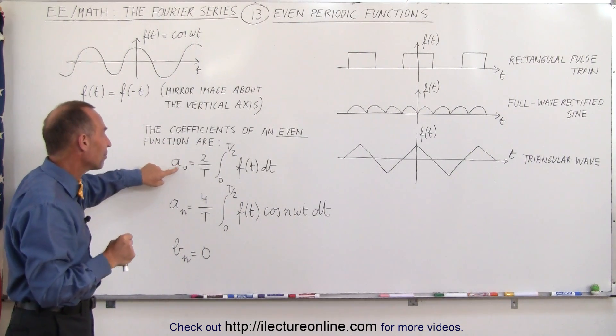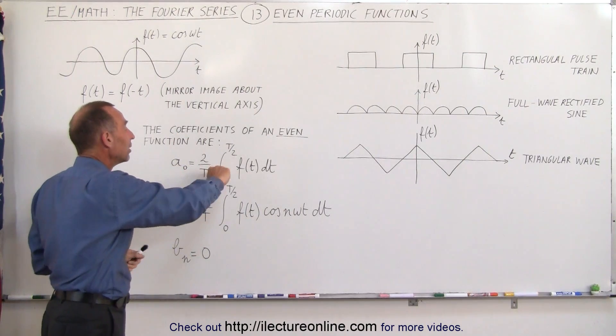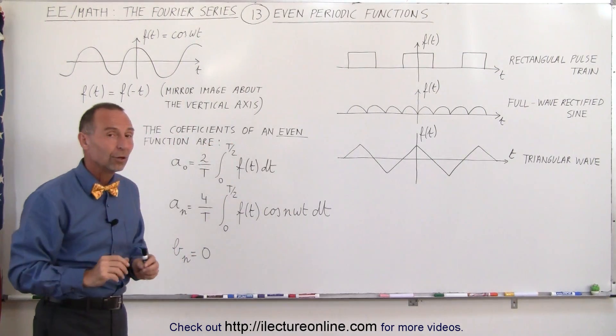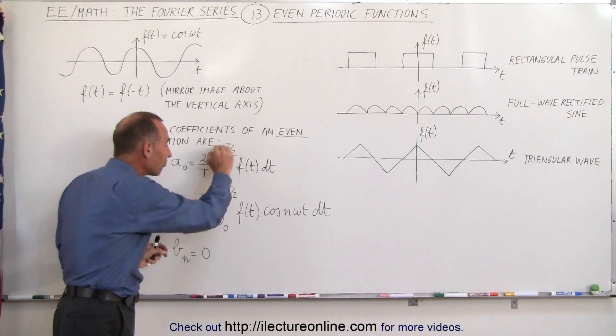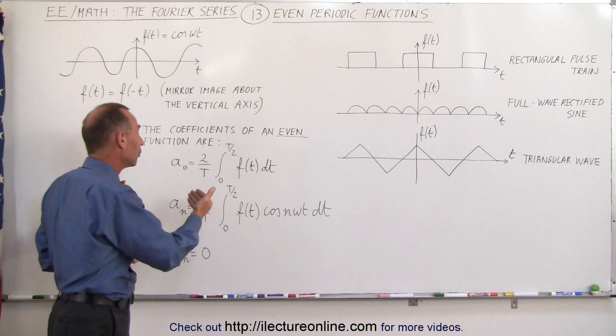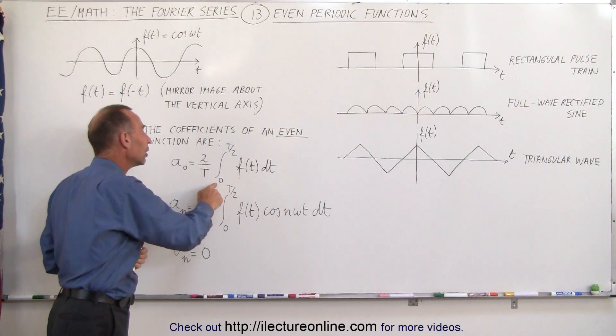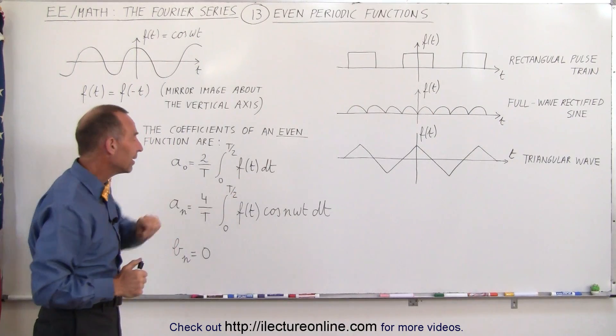A₀ can be found to be 2 over T. Remember, normally we say 1 over T, but then we integrate over the entire period. We only have to integrate over half the period because of the symmetry on both sides of the vertical axis. Therefore, we double the magnitude, so it's 2 over T, integrating only over half the period of f(t)dt.